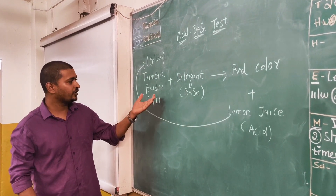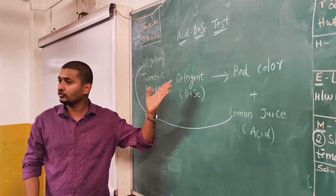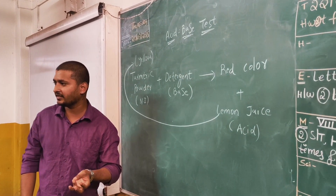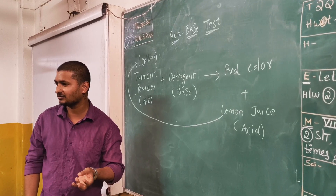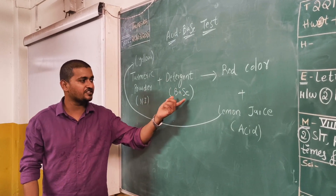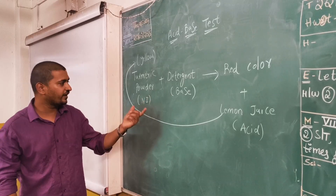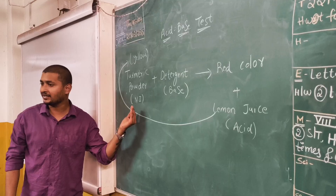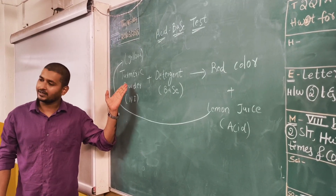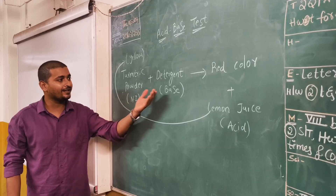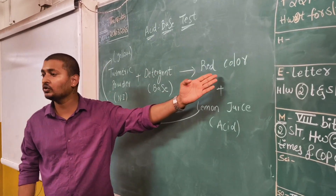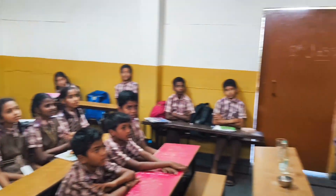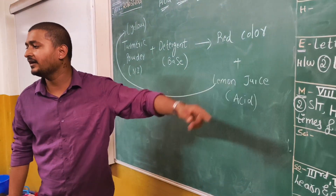Very good. So whenever you are adding a base — detergent, surface, tide, wheel — all these things. Detergent is nothing but a base. So whenever you are adding a base to the natural indicator, where in our case natural indicator is nothing but turmeric powder, it will turn to? Red color! Before it was yellow color, now it has turned to red color.